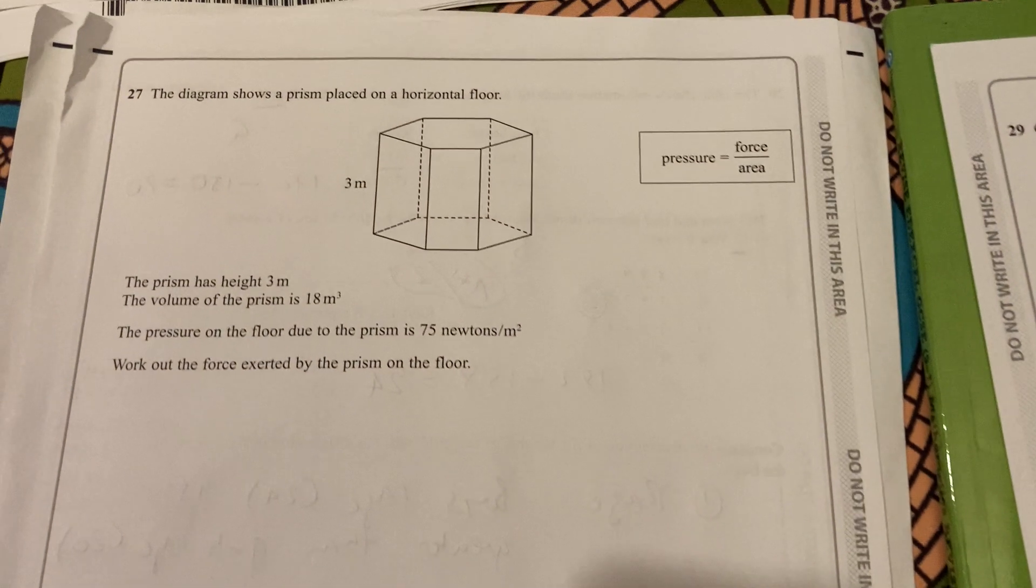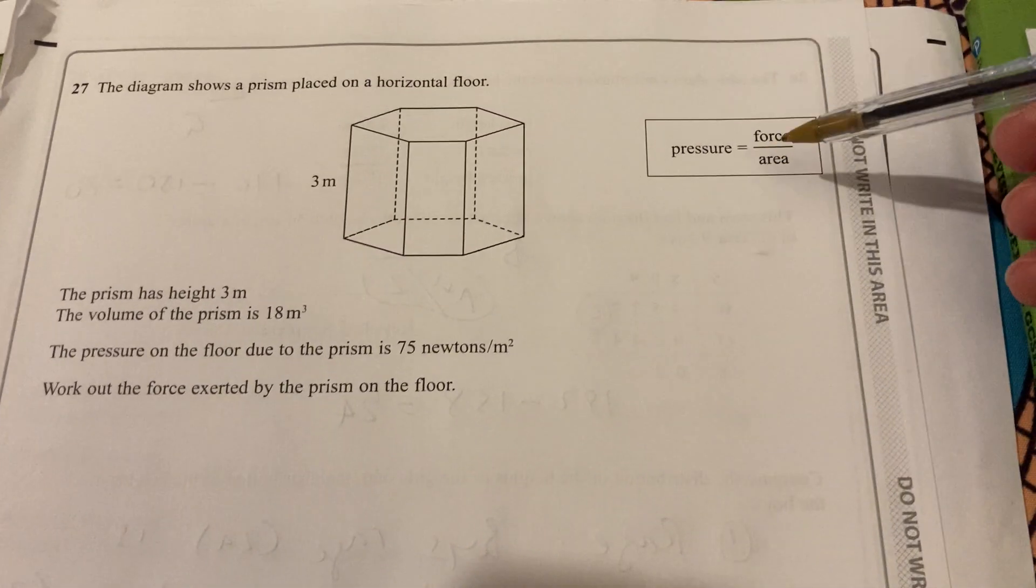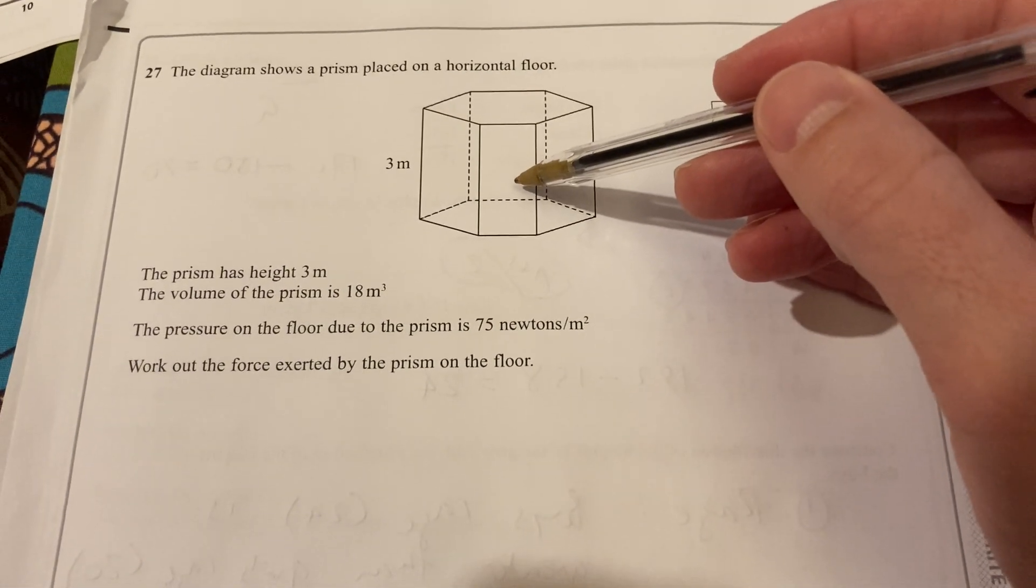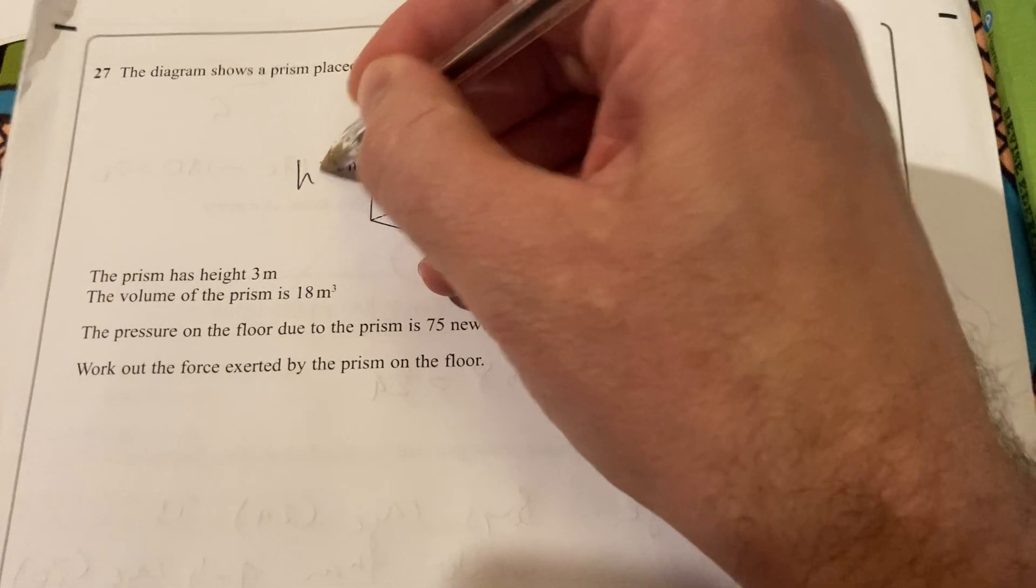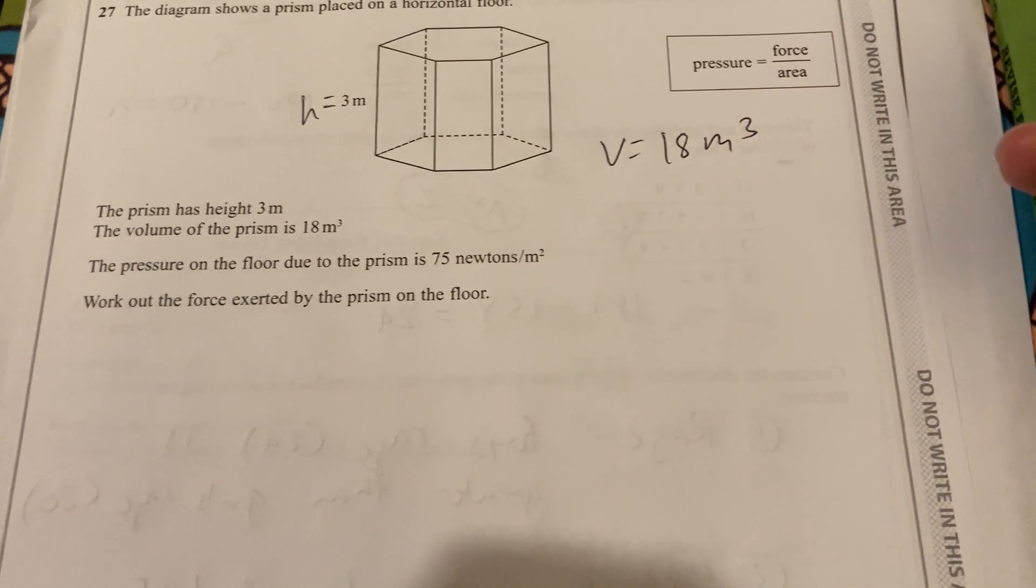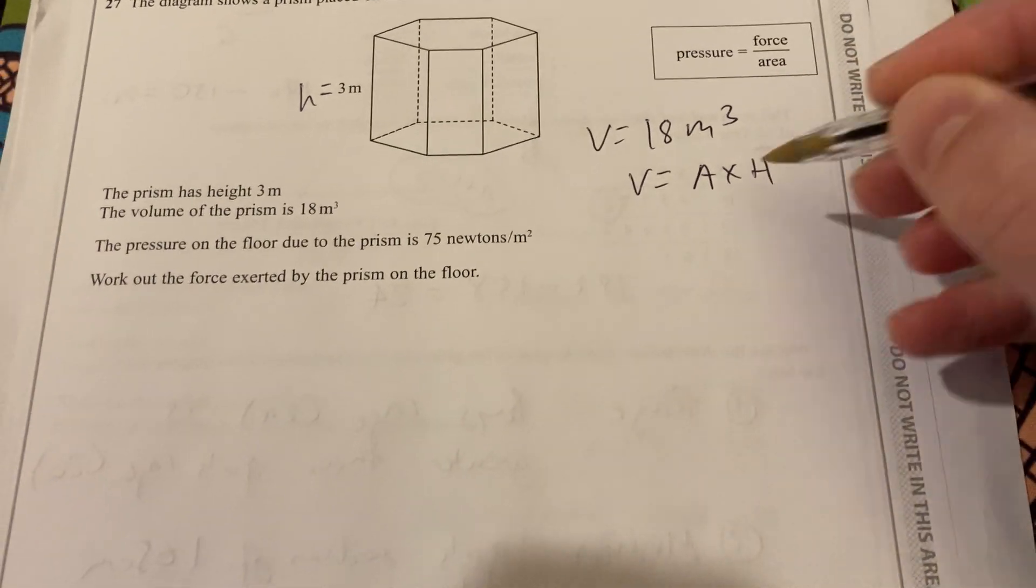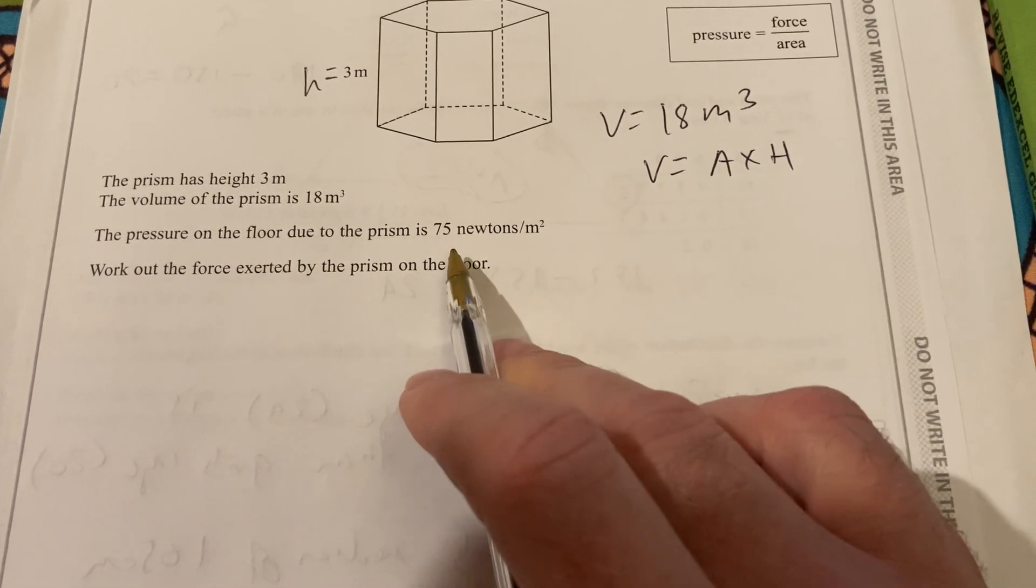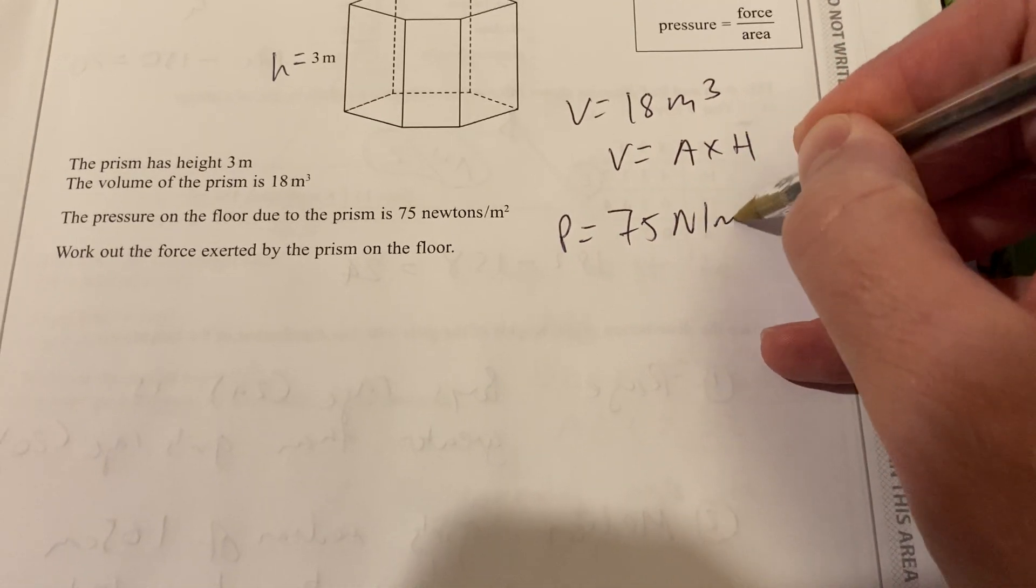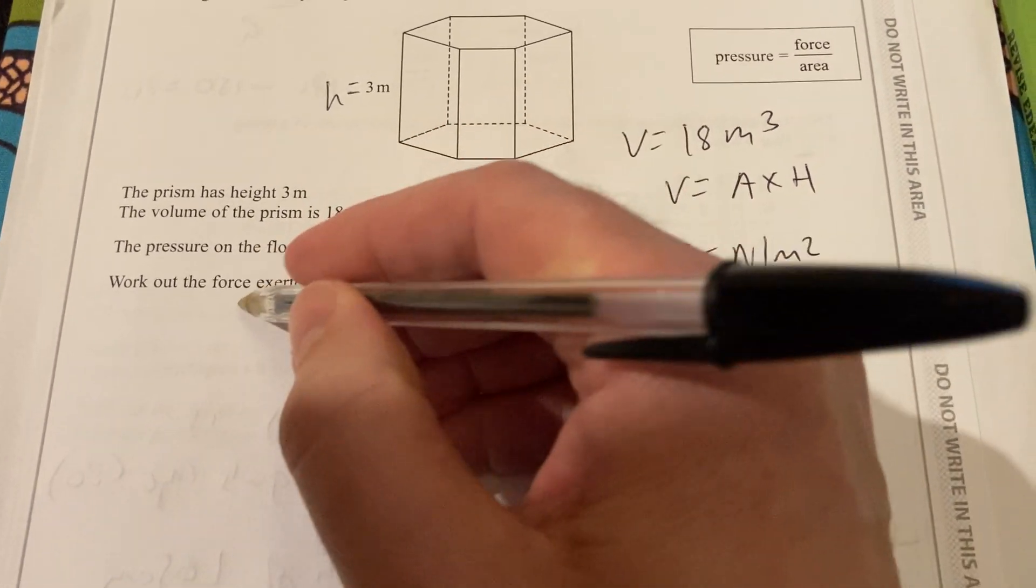Moving on to question 27. This is compound measures here. Because pressure equals force over area. And that's given to us. And they have a prism placed on the horizontal floor. The prism has a height of 3. That's the height there. And the volume is 18 meters cubed. Now we know that volume is area times height. So we might need that in a second. The pressure on the floor due to the prism is 75 newtons. So the pressure is 75 newtons per meter squared. So we're going to have to find a way to combine these. Because we've got to work out the force exerted.